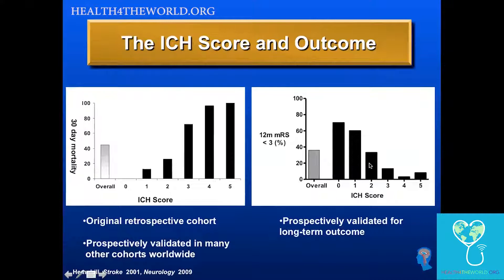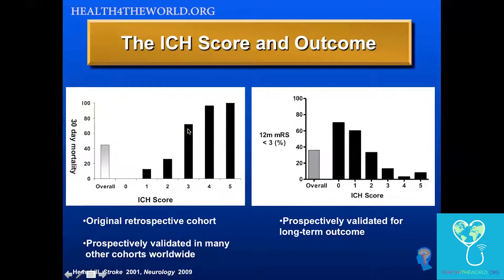It's very important to emphasize that one of the problems with using any score like this is people focus too much on a specific number. I've seen people say the ICH score is four, therefore they have a 96% risk of mortality. That's really not how we should be using these. We should use them to say a four is worse than a three is worse than a two, but there is inherent uncertainty around the exact point estimates. If you take a patient with an ICH score of three and say this is bad, we're not going to treat them aggressively, then they're probably not going to do well. Don't allow the use of this to convince you not to treat aggressively. Use it to help communicate properly and focus on optimal treatments for patients.